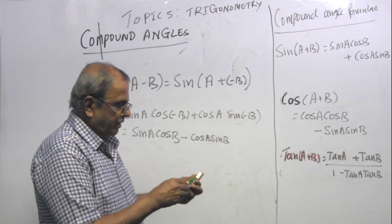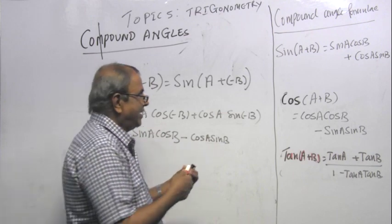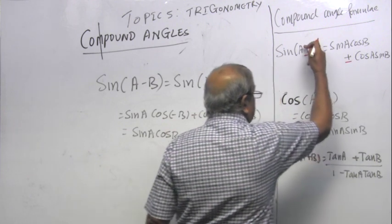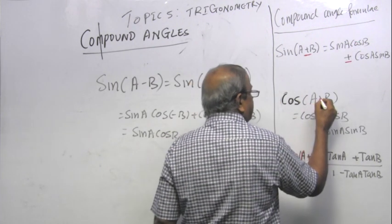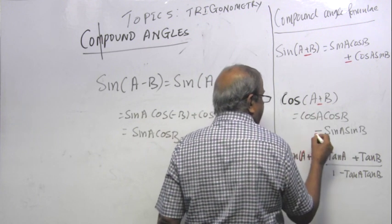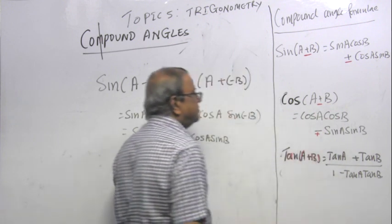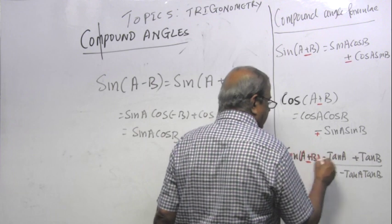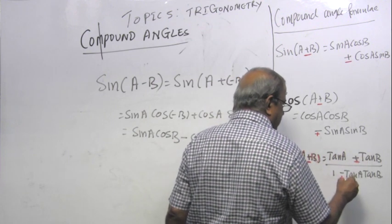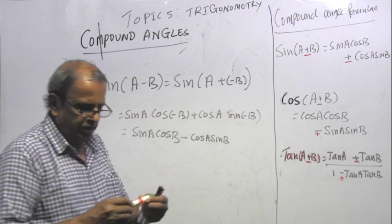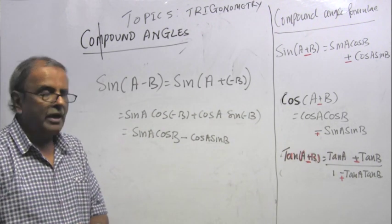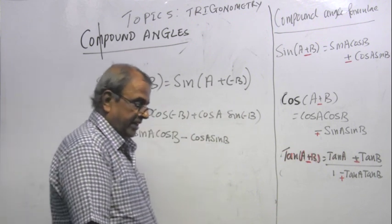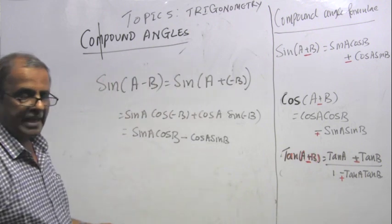Tan of A minus B is tan A plus tan of minus B over 1 minus tan A tan of minus B. Tan of minus B is minus tan B. So tan A minus tan B, 1 plus tan A tan B. Instead of writing the whole formulae, if this is a minus, that will be a minus. Minus is below. If that is a minus, here it is a plus. These formulae you find in your formula book.